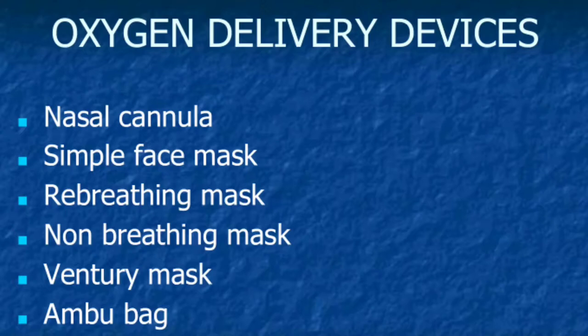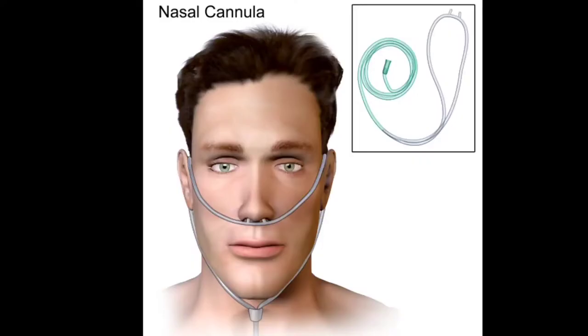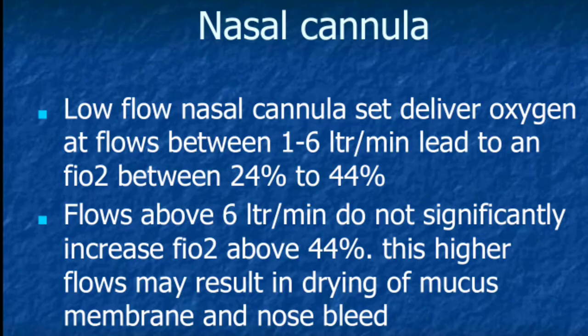Different types of oxygen delivery devices include nasal cannula, simple face mask, re-breathing mask, non-rebreathing mask, venturi mask, and ambu bag. Factors that determine which system to use: patient comfort, the level of FiO2 that is needed, the requirement that the FiO2 be controlled within a certain range, minimum resistance to breathing, and efficient and economical use of oxygen.